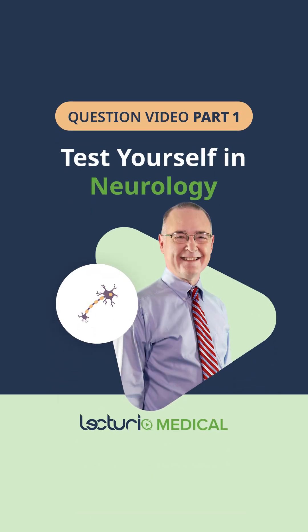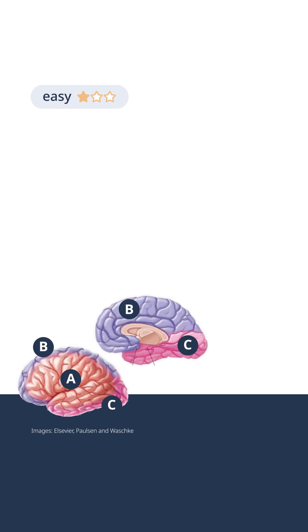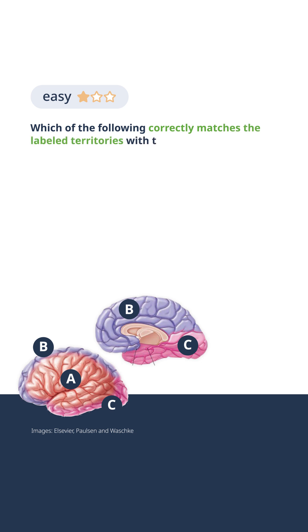Do you think you've mastered neurology? Let's put your knowledge to the test. The following images show the lateral and medial views of the brain with different arterial territories labeled as A, B, and C. Which of the following correctly matches the labeled territories with their supplying arteries?